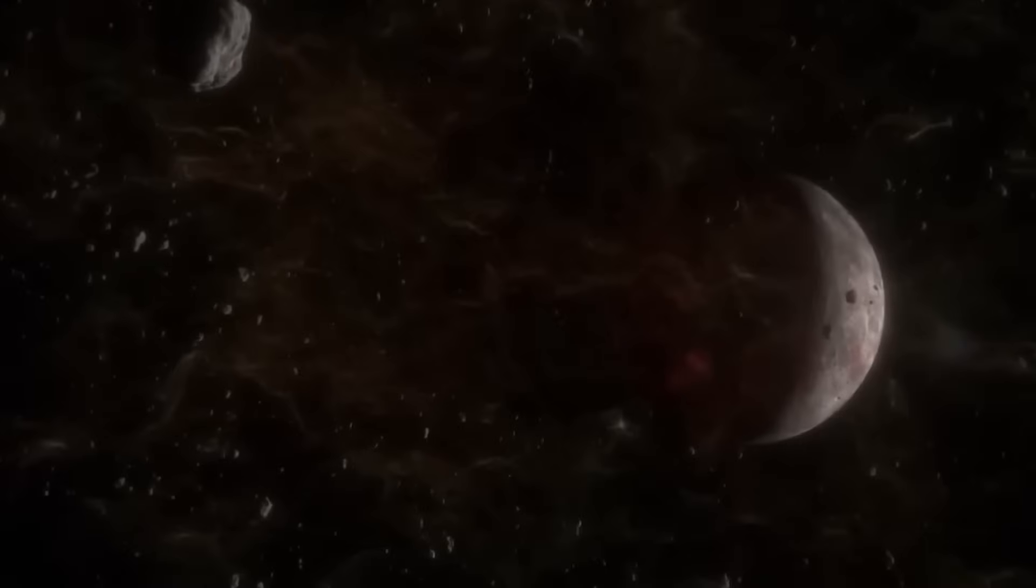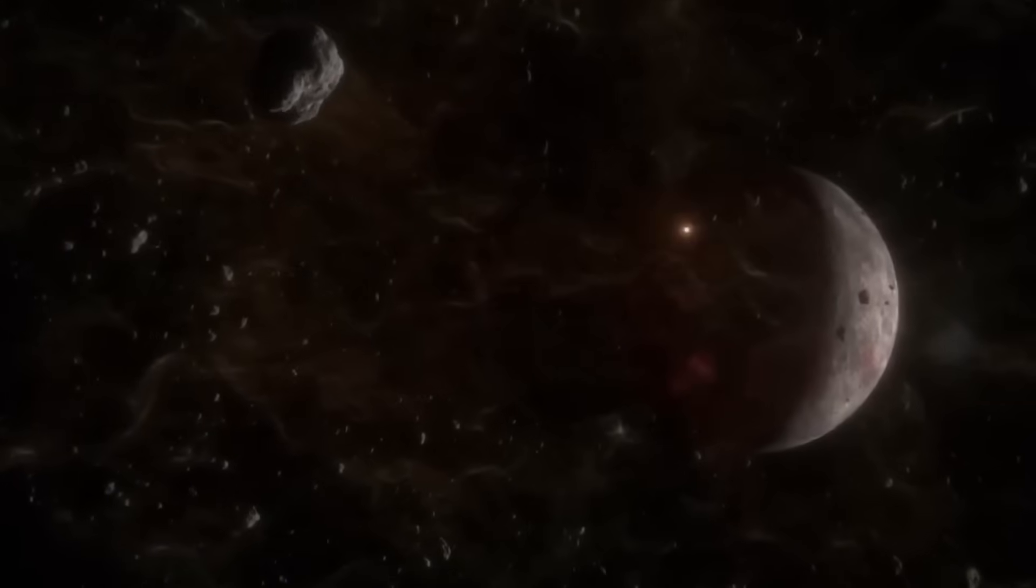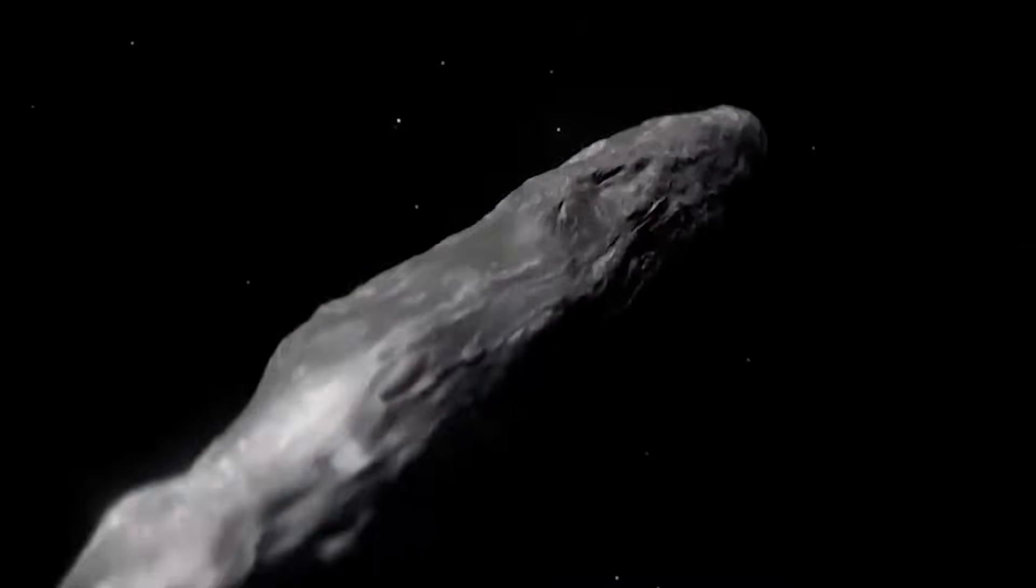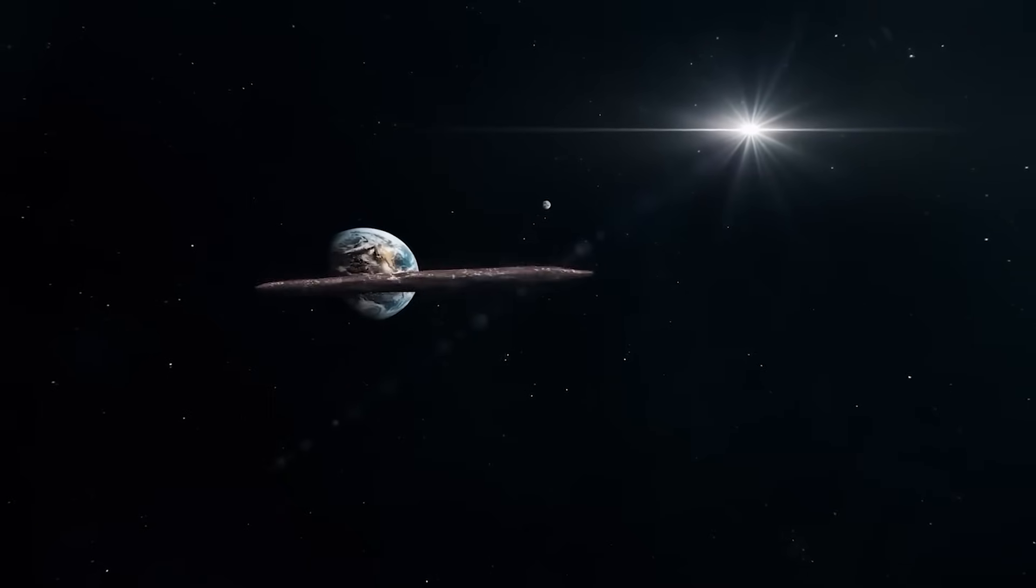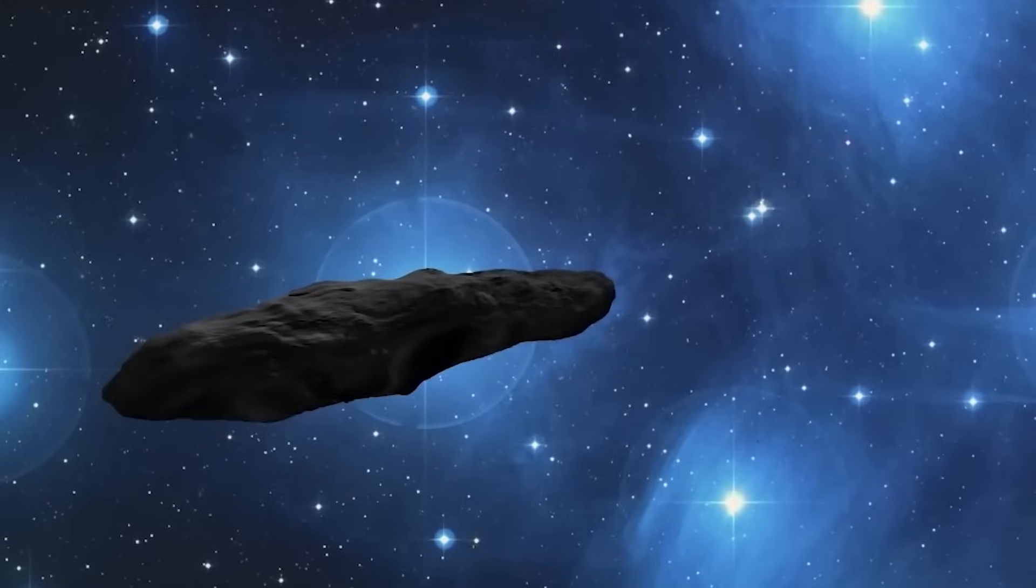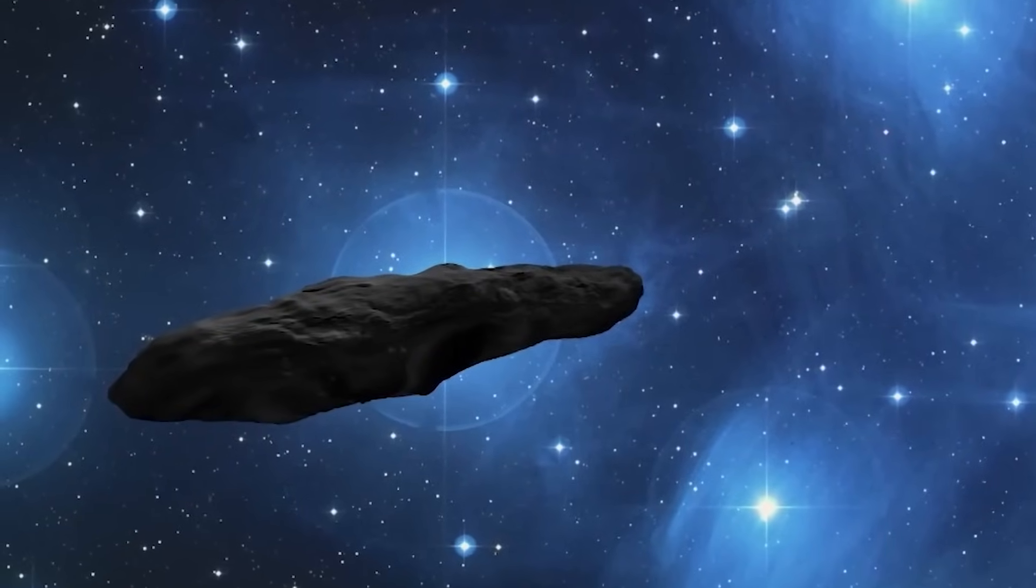If this hypothesis turns out to be true, it is likely that the gas released by Oumuamua is hydrogen, the lightest and most abundant element in the entire universe. Furthermore, given the relatively low temperatures of Oumuamua compared to that of the Sun, it is likely that some of the hydrogen released is in its molecular form rather than in its atomic form.